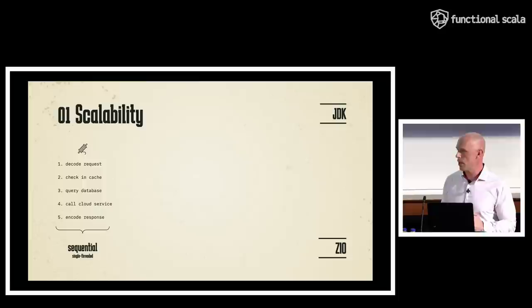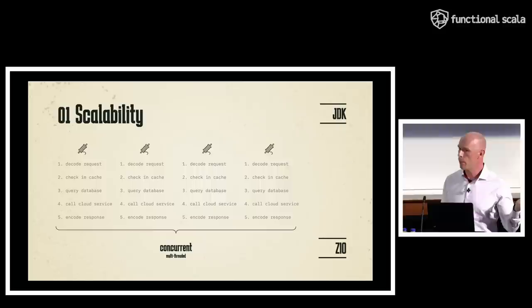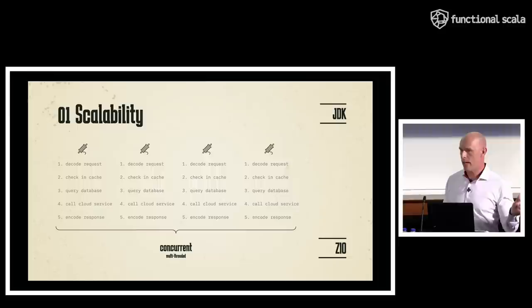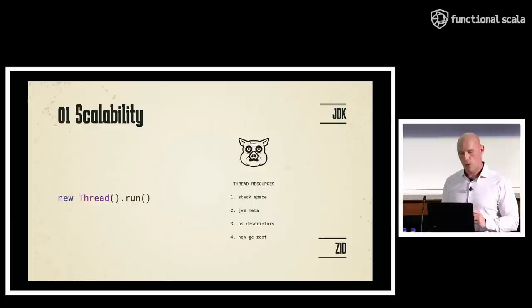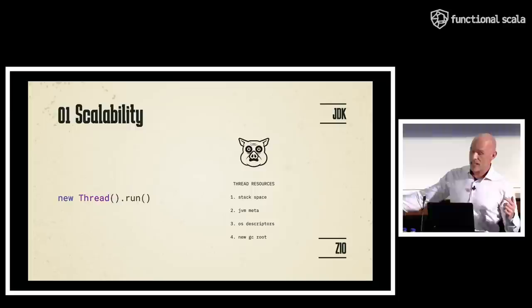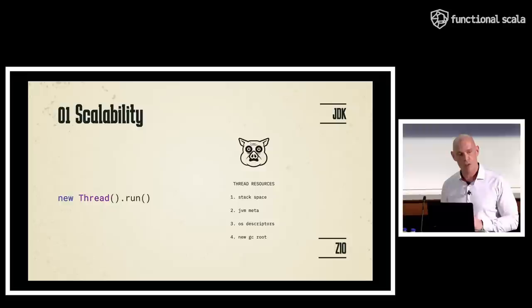To achieve the massive scalability required of modern web servers, we scale horizontally — every incoming connection, every element from a Kafka queue, every partition of data has its logic handled by another thread. But that raises a big problem on the JVM: threads are not cheap resources. They are very expensive. There's stack space, JVM metadata, operating system-level information, and every thread becomes a new root for garbage collection.